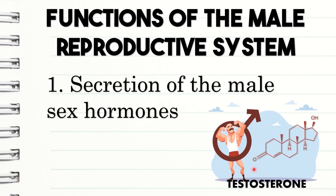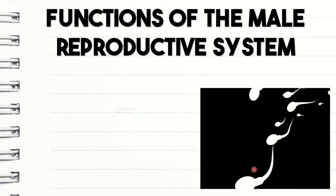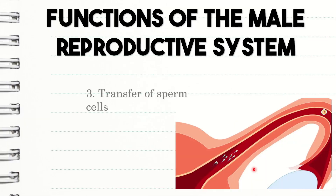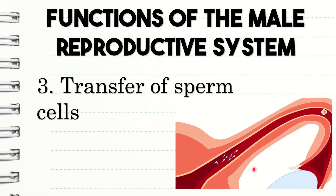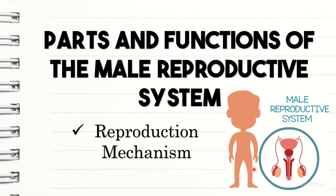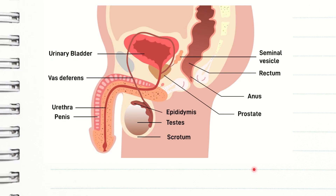Here are the functions of the male reproductive system. Number one, secretion of the male sex hormones. Number two, production of sperm cells. And lastly, transfer of sperm cells. Now, let us discuss the parts and functions of the male reproductive system and their mechanism. In human males, the reproductive system is mostly outside. The parts outside include the penis, scrotum, and testicles.